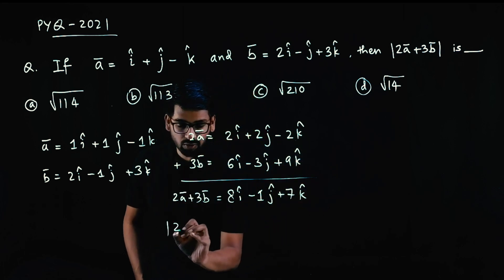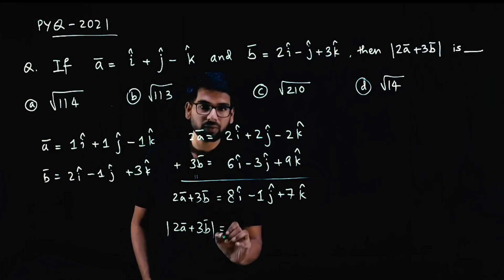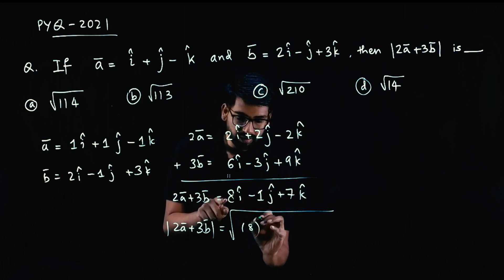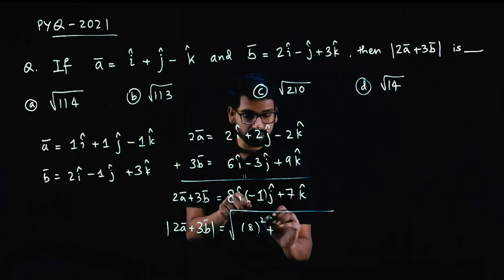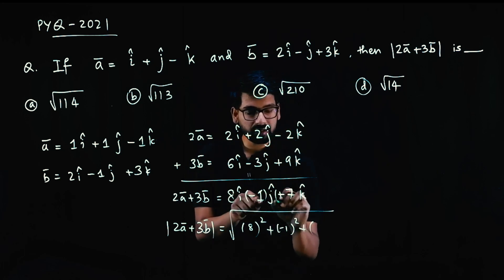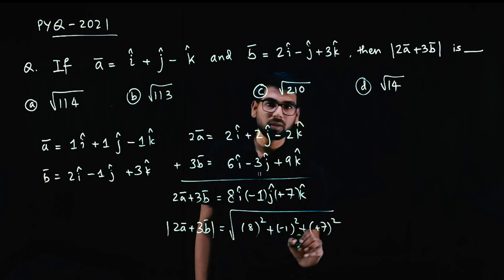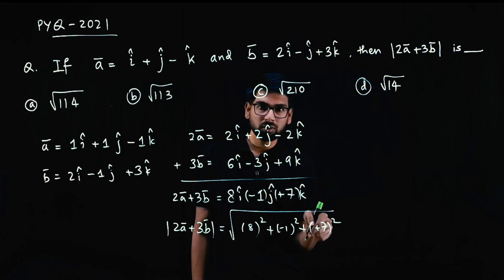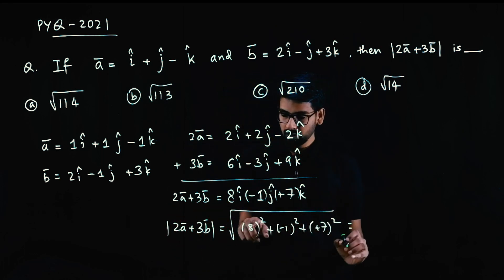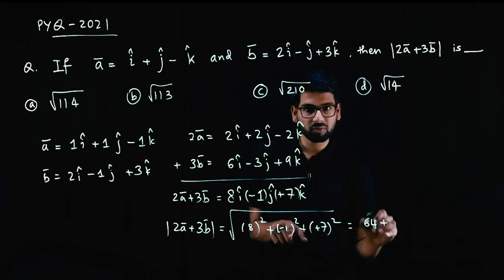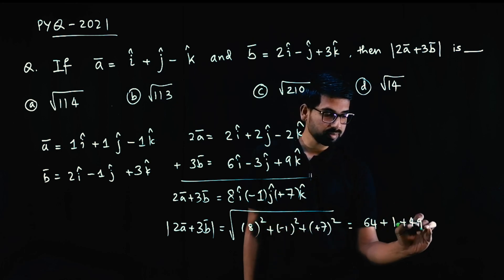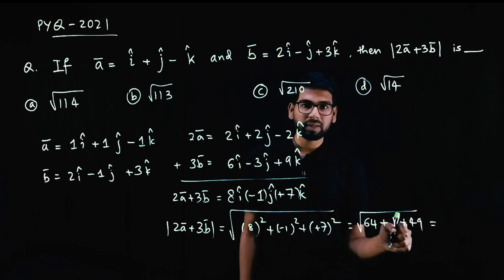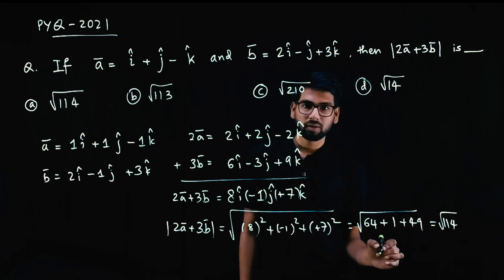How do you take magnitude of 2a plus 3b? Magnitude of any vector is square root of i coefficient with sign, whole squared, plus j coefficient with sign, whole squared, plus k coefficient with sign, whole squared. The square root of the sum of square of all the coefficients. So this will be 8 square is 64 plus minus 1 square is 1 plus 7 square is 49 under root. 49 plus 1 is 50, 64 plus 50 is 114 square root.